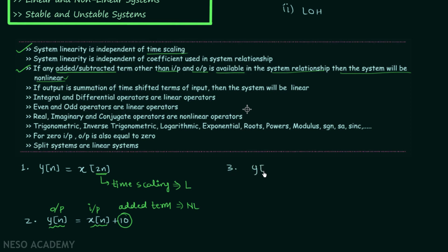In the third example, output y(n) is equal to n multiplied by x(n). It is clear that n is the coefficient in the system relationship. Referring to conclusion number 2, system linearity is independent of the coefficient used in the system relationship. Therefore there is no effect of the coefficient n, and the system is linear in nature.